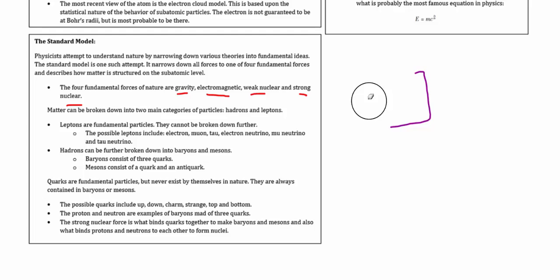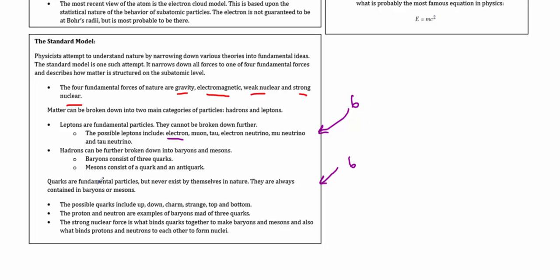Leptons are fundamental particles — nothing is inside them; they are the smallest version of themselves. There are six leptons, believed to be six of the twelve building blocks of all nature. The most familiar lepton is the electron; others include the muon, tau, and neutrinos. Hadrons break down into baryons and mesons, each made of quarks. Quarks are the other six fundamental particles — they're never found alone but always combine in trios to make baryons or in pairs to make mesons.